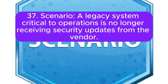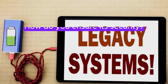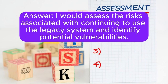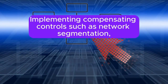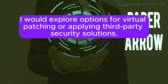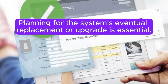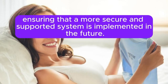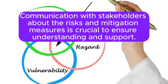Scenario 37: A legacy system critical to operations is no longer receiving security updates from the vendor. How do you ensure its security? I would assess the risks associated with continuing to use the legacy system and identify potential vulnerabilities. Implementing compensating controls such as network segmentation, strict access controls, and enhanced monitoring would help mitigate these risks. I would explore options for virtual patching or applying third-party security solutions. Planning for the system's eventual replacement or upgrade is essential, ensuring that a more secure and supported system is implemented in the future. Communication with stakeholders about the risks and mitigation measures is crucial to ensure understanding and support.